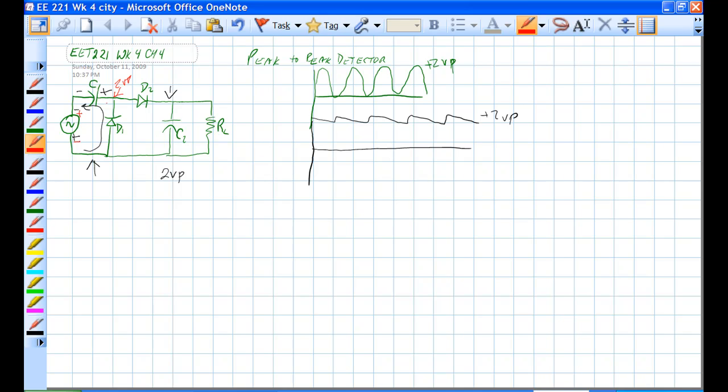And that 2V peak charges this cap to 2V peak. That's where this comes from here. And that cap charges to the 2V peak, and it discharges through RL, which gives us some ripple here.